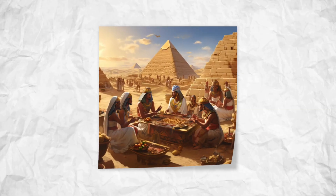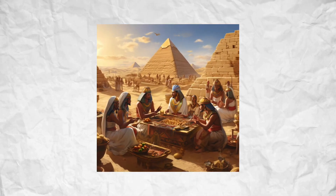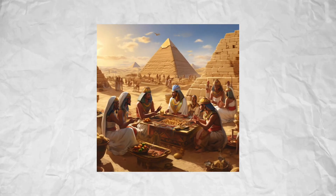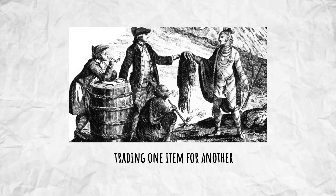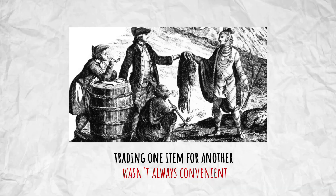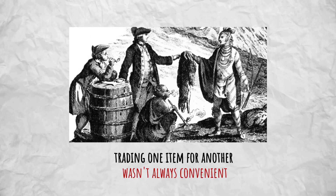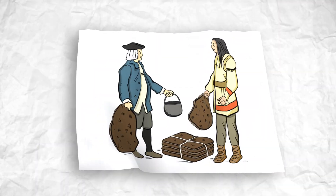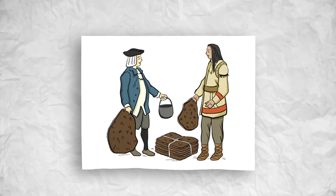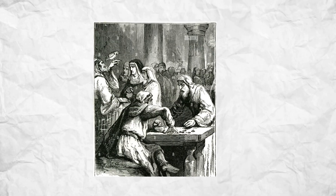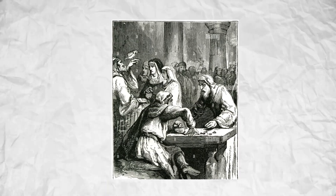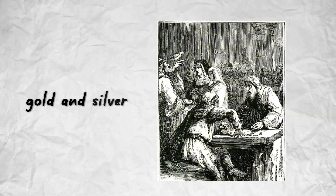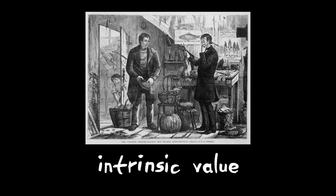Back in ancient times, people needed a reliable way to trade goods and services. Bartering — trading one item for another — wasn't always convenient. Imagine trying to trade a cow for some grain; it would be quite a hassle to figure out a fair exchange. So people started using commodities like gold and silver, which had intrinsic value, as a medium of exchange.